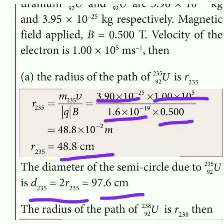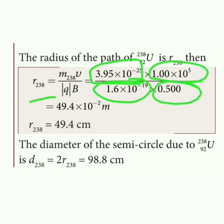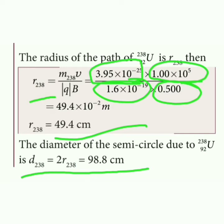Now we calculate for Uranium-238. The radius formula is mass times velocity divided by charge times magnetic field. Substituting values for Uranium-238, the radius is 49.4 cm. The diameter D equals 2R equals 98.8 cm. That is the diameter for Uranium-238.